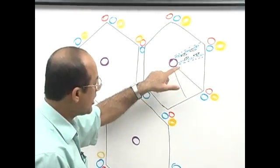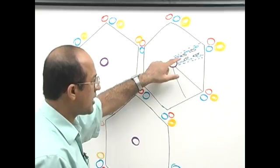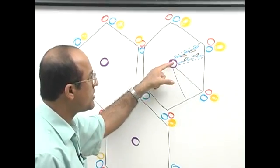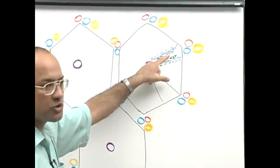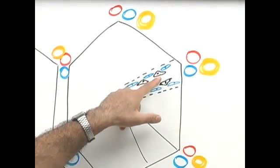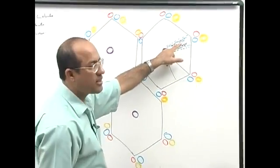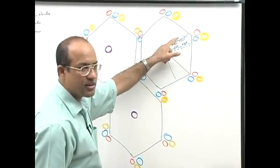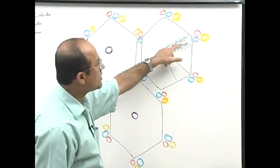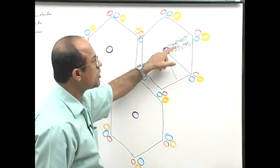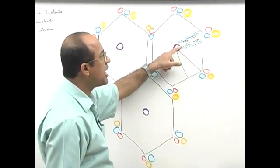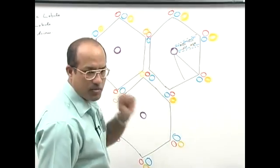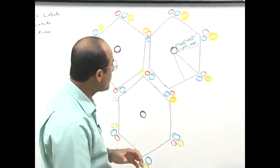Kupffer cells are in fact the fixed macrophages present in the liver sinusoids. Along with the endothelial cells, Kupffer cells are also lining the sinusoids so that when blood is moving from the periphery to the center, components of the blood are freely exposed to the Kupffer cells. Blood is also coming from the spleen — if there are fragments of broken RBCs, they will be removed by the Kupffer cells. So Kupffer cells are filtering whatever toxins, bacteria, or fragments of RBCs are passing through the portal or sinusoidal blood.